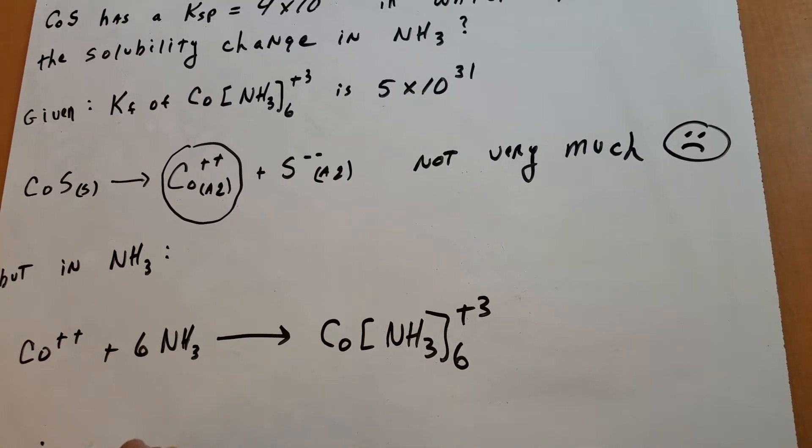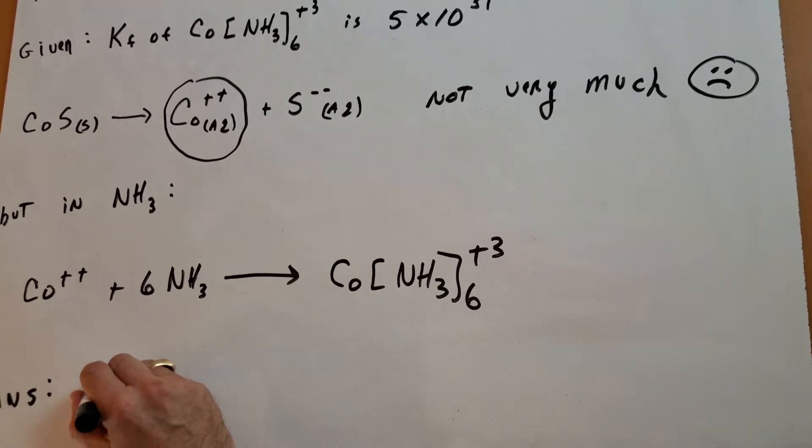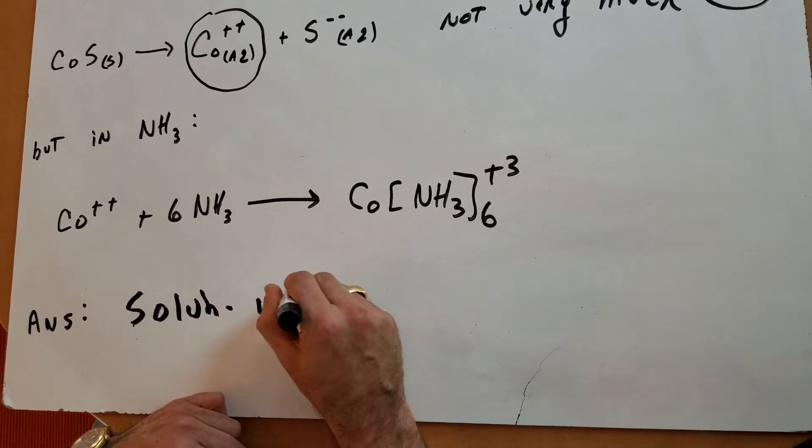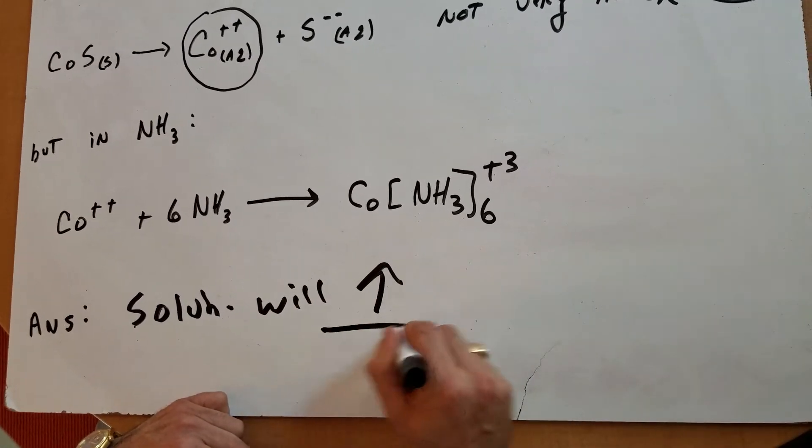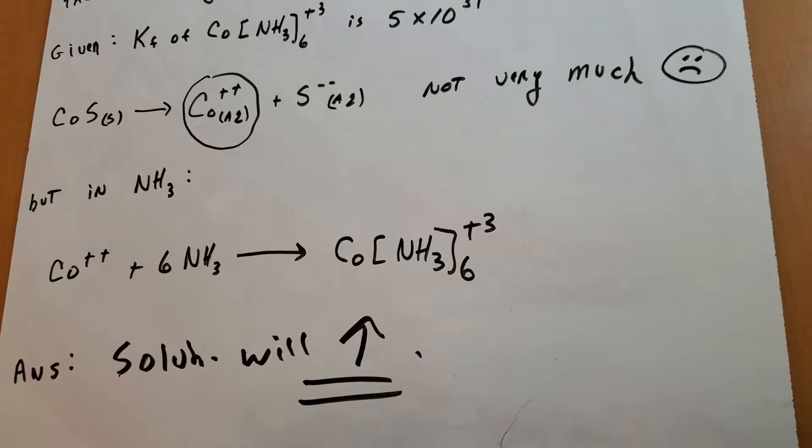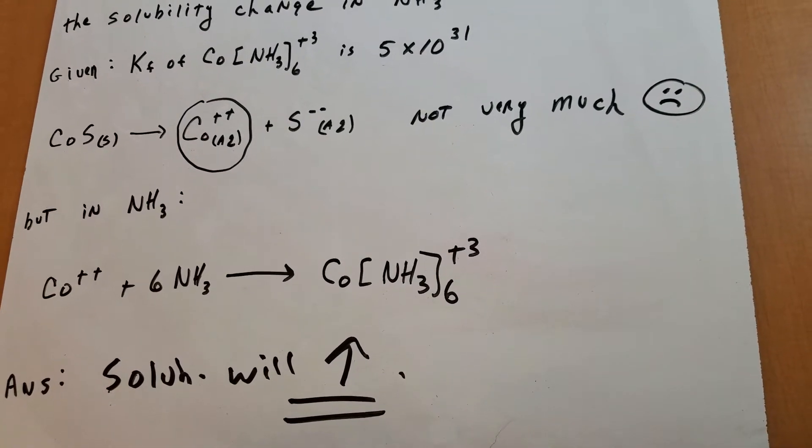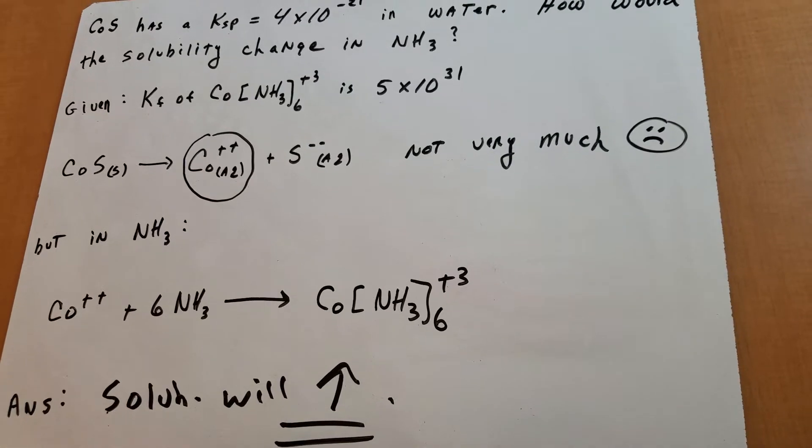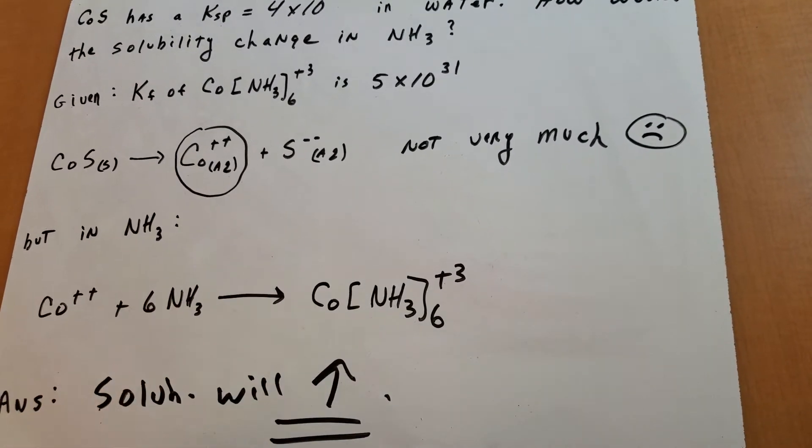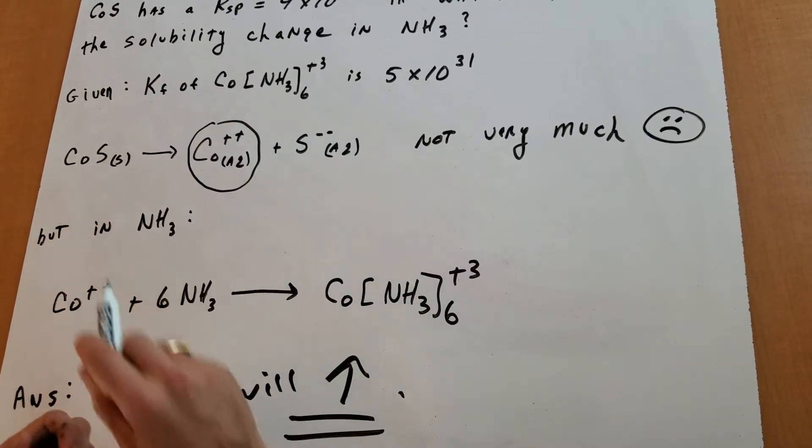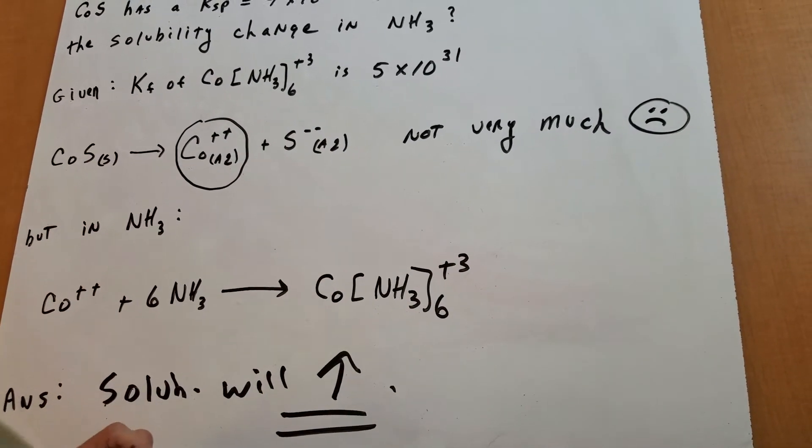So, the answer to the problem is in ammonia, what would happen? The answer is that the solubility will what? Increase. You would increase the solubility in ammonia. As I tell all my students, always be on the lookout for a complex ion in ammonia. Ammonia loves to form complex ions. And, as you can see, these formation constants are enormous.